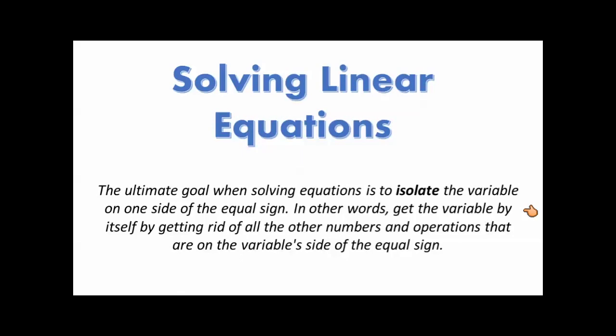In other words, we want to get the variable by itself by getting rid of all the other numbers and operations that are on the variable's side of the equal sign.